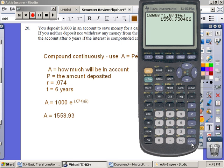The amount of money that will be in the account after 6 years is $1,558.93.